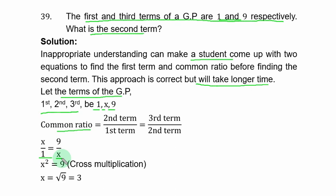Cross multiply to get s² equal to 9. Take the square root of both sides, and the second term s is equal to 3.